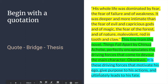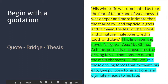Then the thesis states: 'It is these driving forces that motivate his ego, give purpose to his actions, and ultimately lead to his fate.' From this last section we can tell what the three body paragraphs are going to be. One paragraph will be about motivating his ego, one about giving purpose to his actions, and the third about ultimately leading to Okonkwo's fate. This thesis section outlines what the three main driving arguments will be within the paper.